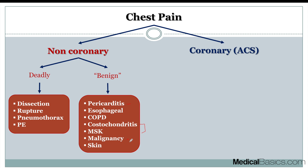Malignancy, although deadly, isn't necessarily acute — it involves more progressive chest pain that came on over a long period of time and progressively worsened. One thing you cannot ever forget is skin. A common example is herpes zoster, or shingles. Your first step in a physical exam is inspection, so whenever someone complains of chest pain, the last thing you want is to do an intensive workup and forget that the patient had shingles — something that is important and oftentimes overlooked.